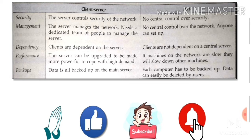The third comparison point is dependency. A client-server network is dependent on the server — if any client needs to connect or get resources from another client, they must request through the server. However, in peer-to-peer networking, there is no such dependency, because all computers are directly connected to each other.